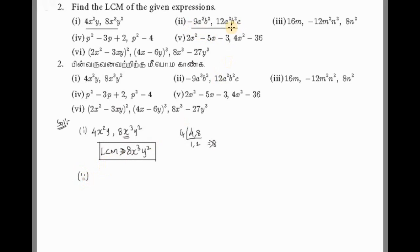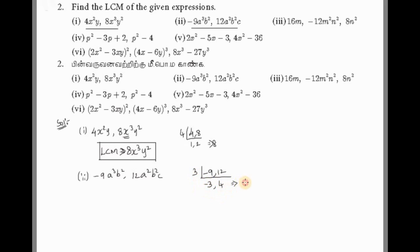The second problem: find the LCM of -9a³b² and 12a²b²c. For the numbers, -9 and 12: using the 3-times table, -9 is 3 times -3 and 12 is 3 times 4. So the LCM of the numbers is 3 × (-3) × 4 = -36. The LCM of the numbers is -36. Now for the variables, a: the highest power between a³ and a² is a³.